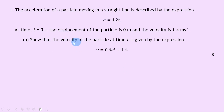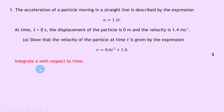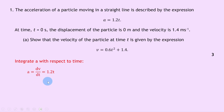We want an expression for velocity in terms of time t, and we're given an expression for acceleration. So we need to integrate the acceleration a with respect to time t. We can write a equals dv/dt is equal to 1.2t, where acceleration equals dv/dt is on your relationship sheet — it just tells us that acceleration is equal to the rate of change of velocity.